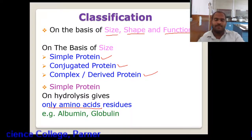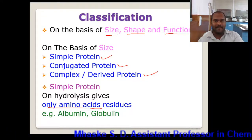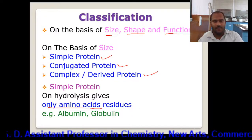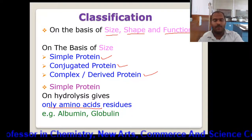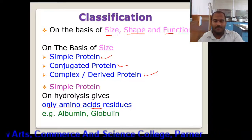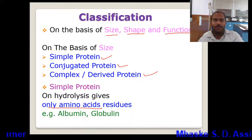Most of the time, simple proteins are considered as those which have only the polypeptide chains. That is, on hydrolysis of albumin or globulin, we are only going to get amino acids. Albumin and globulin are present in blood and other body fluids.